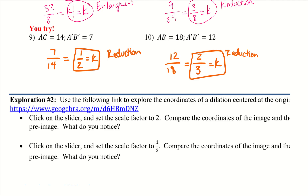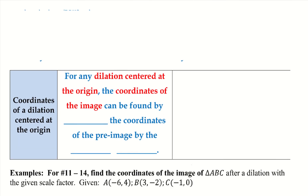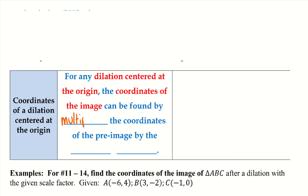So the rule for coordinates of a dilation centered at the origin: for any dilation centered at the origin, the coordinates of the image can be found by multiplying the coordinates of the pre-image by the scale factor. Not only are the sides doubled or cut in half, so are the coordinates.